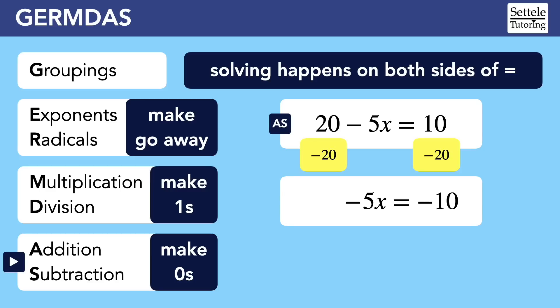Now, is anything attached to the x with multiplication or division? Yes, the negative 5 is being multiplied, so we should divide by negative 5 to cancel it out and make a 1. And of course, we have to divide on both sides of the equation. We get 1x equals 2. And since the 1 in front of the x doesn't really do anything, we erase it. There are no exponents or radicals, so we've got our answer that x equals 2.